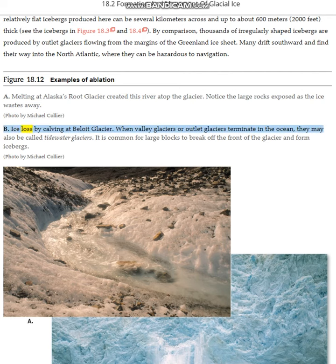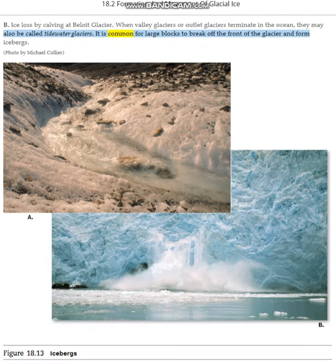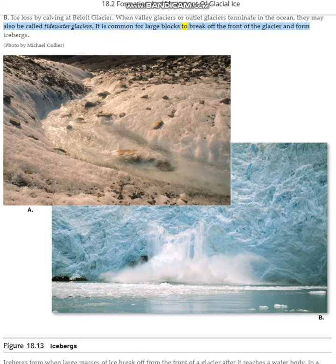Ice lost by calving at Beloit Glacier. When valley glaciers or outlet glaciers terminate in the ocean, they may also be called tidewater glaciers. It is common for large blocks to break off the front of the glacier and form icebergs.